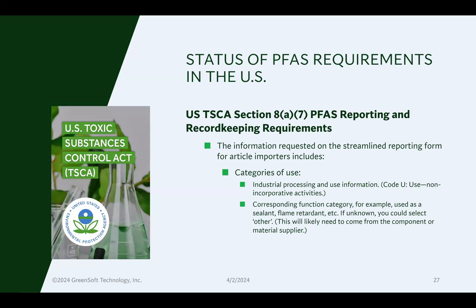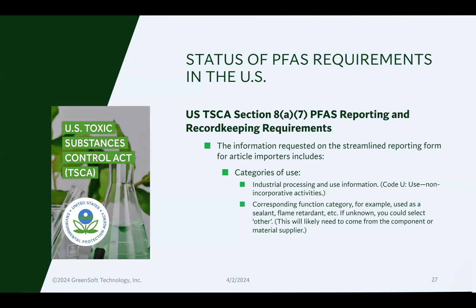Getting into categories of use, you need to disclose how the PFAS was used inside the article — not the use of the article itself, but the use of the PFAS. Was it used as a flame retardant, a cleanser, a stabilizer, or a colorant? That's done by selecting a functional category from a pick list. You also need to disclose how you are using the PFAS, in which case you would choose code U — non-incorporative activities — because you're importing an article that already had the PFAS incorporated by someone else before you imported it.